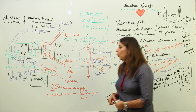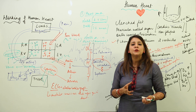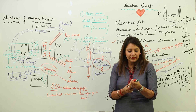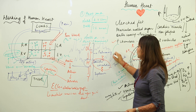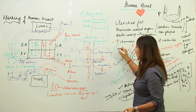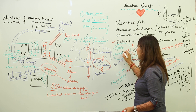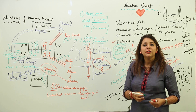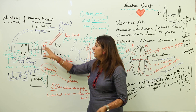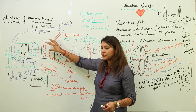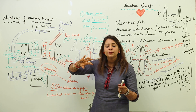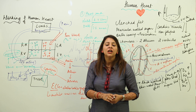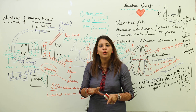Heartbeat is the rhythmic contraction and relaxation of the heart. Two important terms are systole — another name for contraction — and diastole — another name for relaxation. There is also a moment called joint diastole, a fraction of a second in which the whole heart is relaxing.